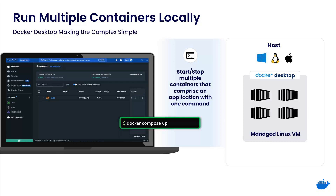Docker Compose gives the developer a way to programmatically define the ports, file sharing, environment variables, and more for multiple containers to be run simultaneously. This enables developers to easily run multiple containers on their local machine with a single command, Docker Compose Up. Developers can define entire development environments with multiple application service containers and pre-built containers like proxies and databases. They can then start and stop those environments as needed to test locally and accelerate their development feedback loop.